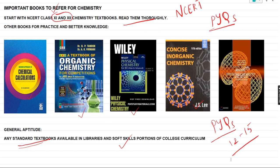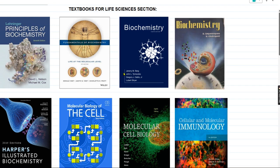This section covers important life sciences textbooks. I've put them all together because each textbook covers topics from various sections. Starting with Lehninger's Principles of Biochemistry — this is the go-to book for biochemistry; reading Lehninger will make you really thorough with all the concepts. Then there is Wiley's Fundamentals of Biochemistry by Stryer, which is a very nice book with good exercises and concepts explained in easy language.